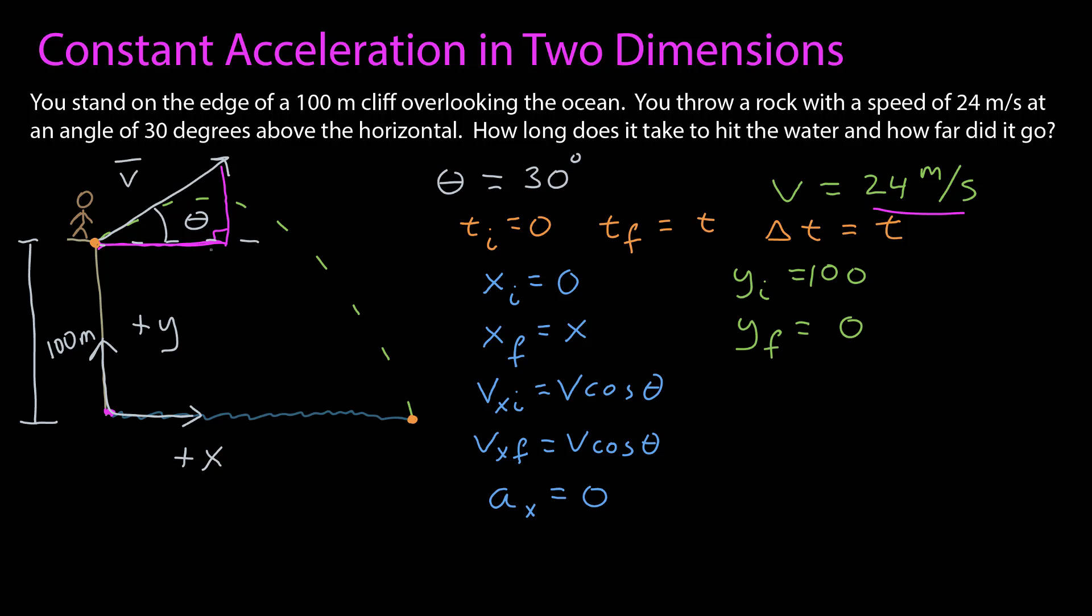So what do I know about what's happening in the y dimension? What's my initial y position? Well, that's 100 meters, given the coordinate system where the zero is down at the ocean. What's the final y position? Well, that's when it hits the ocean. So y final is equal to zero. Do I know my y component of the initial velocity? And I do for the same reason I knew the x component. It's going to be the length of this side of a right triangle, where the magnitude is 24 meters per second. And so it will be the speed times sine theta. I don't know the final y velocity, because it will be accelerating this whole time. I do know that the acceleration, given this coordinate system, will be negative g.